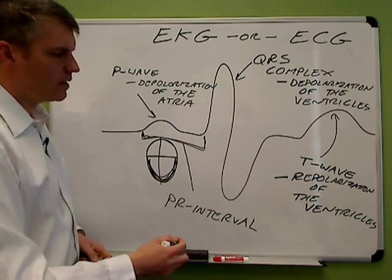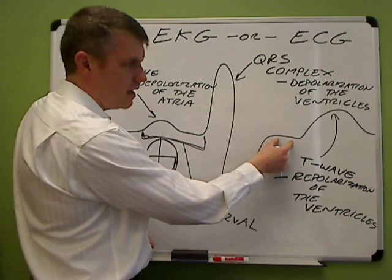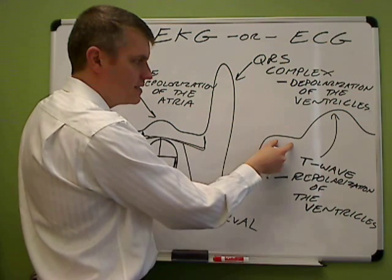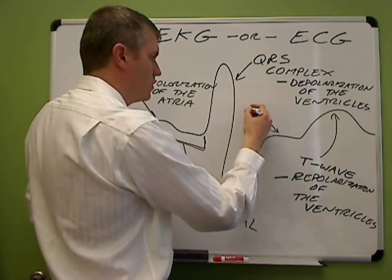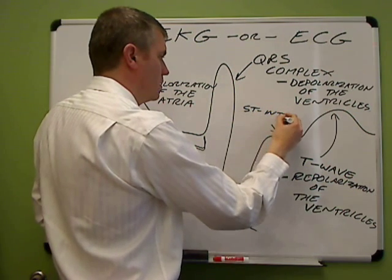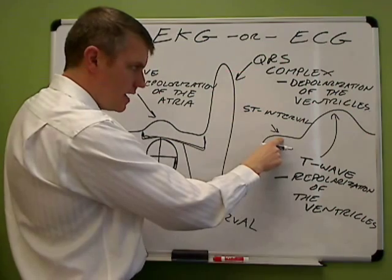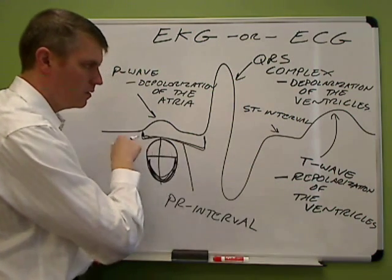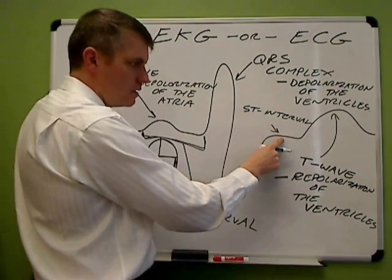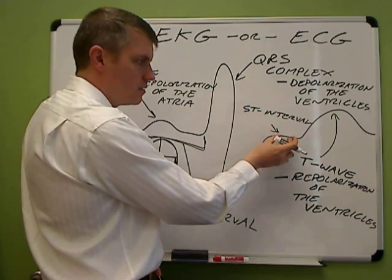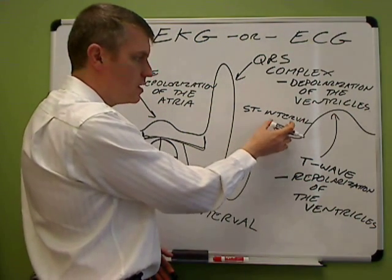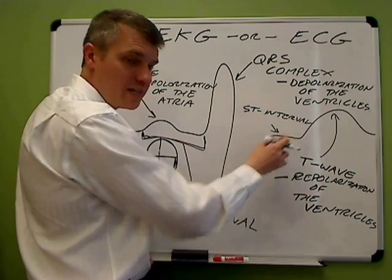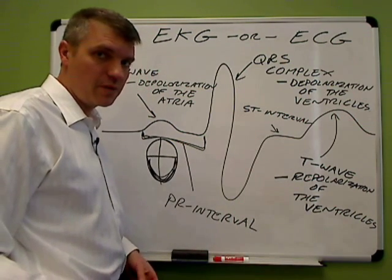Another thing to point out: the flat line between the QRS complex and the T wave is called the ST interval. The ST interval should be level with the other flat parts of the EKG strip. If the ST interval is elevated in certain parts of the EKG, that can indicate ischemia. So this is another major part of the EKG that can be looked at clinically to understand if something's going wrong with the heart.